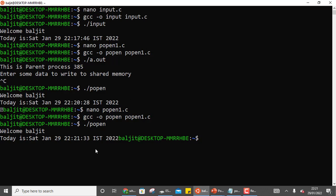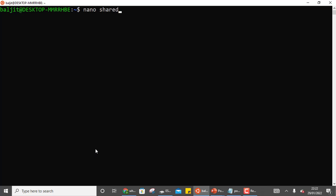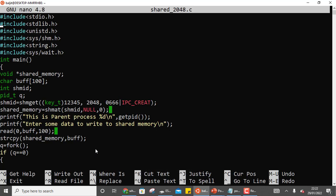Now the second program: we need to write a program to create a shared memory segment of 2048 bytes and write some content into it. Then we need to create a child process which will read the content written by the parent process in the shared memory segment. This is almost similar to the practice program — the only difference is that instead of two separate programs, we are going to create the child process from within the parent process itself. The shared segment size will be 2048 bytes.